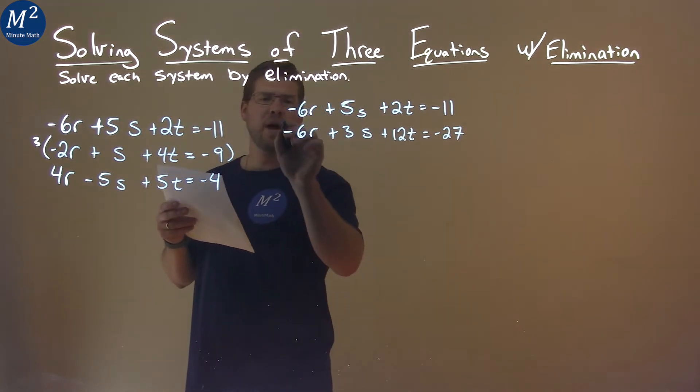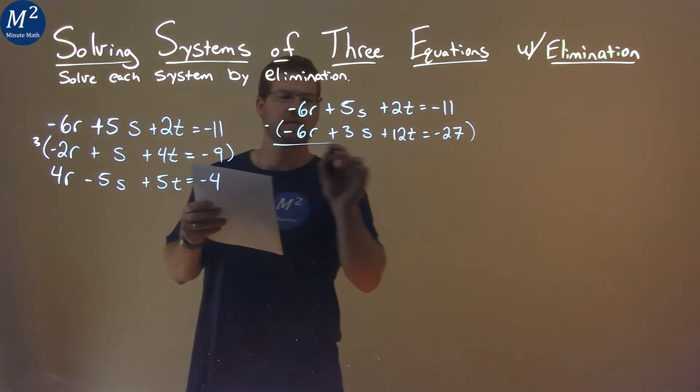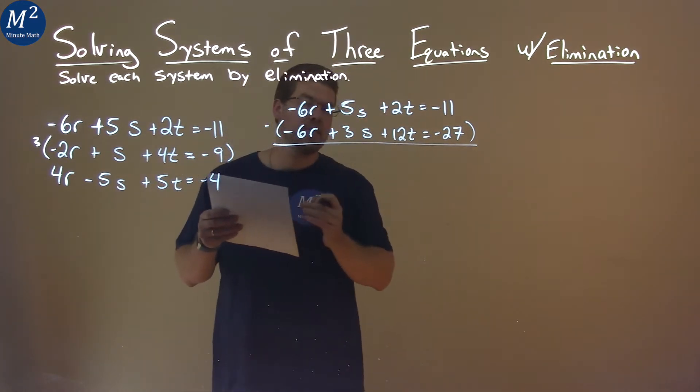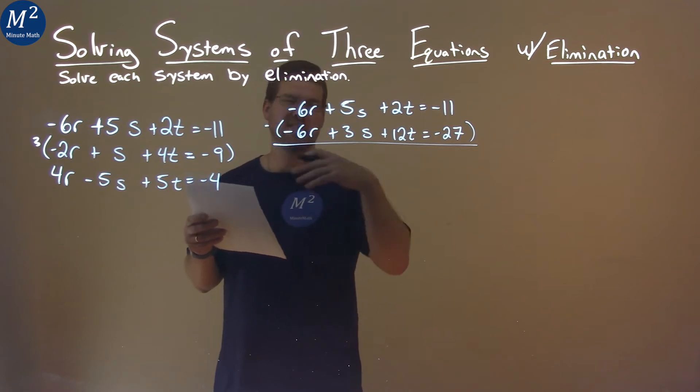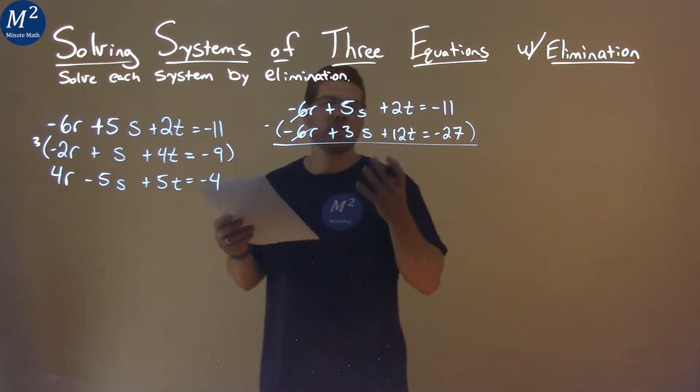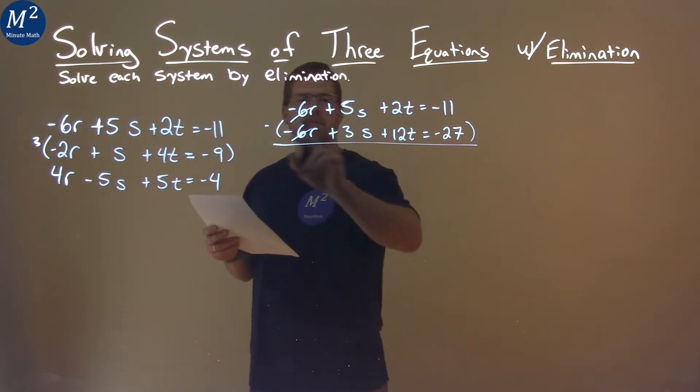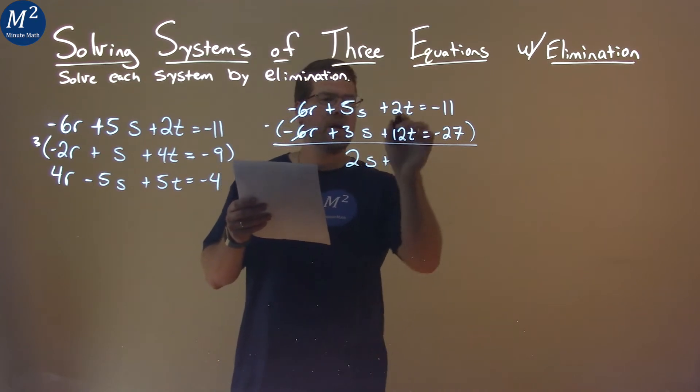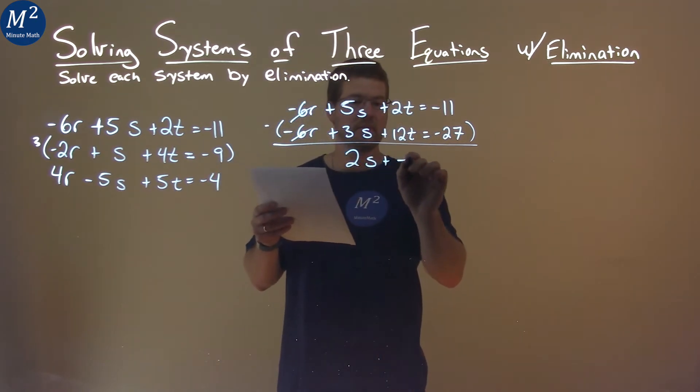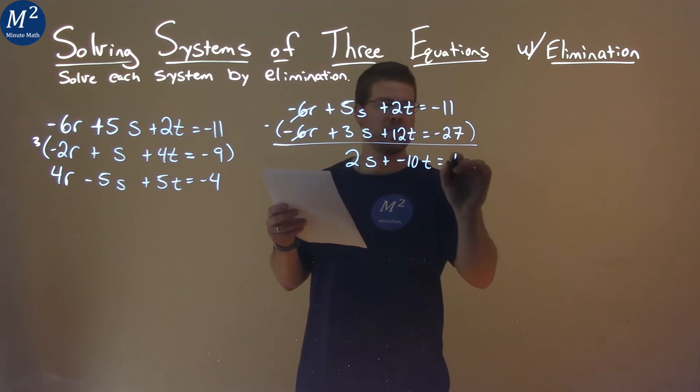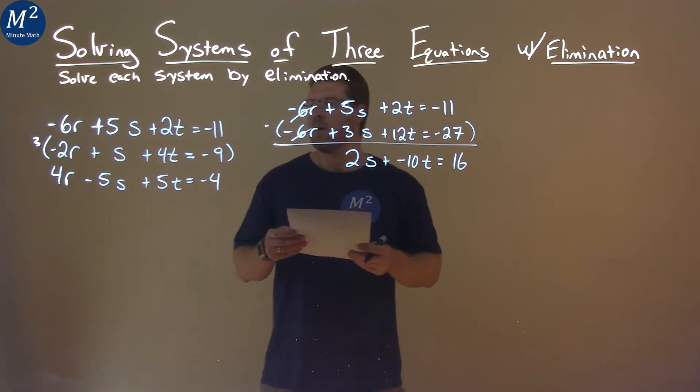If we subtract these two equations now, our r is going to cancel. Negative 6r minus negative 6r is like adding 6r, they cancel. That's the goal—we're trying to get rid of a variable here. 5s minus 3s is 2s, and then 2t minus 12t is negative 10t, and negative 11 minus negative 27 is like adding 27, that's positive 16.